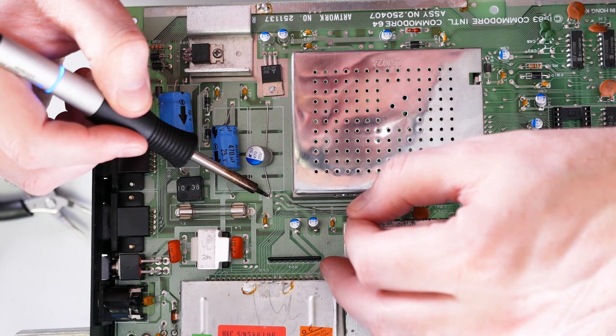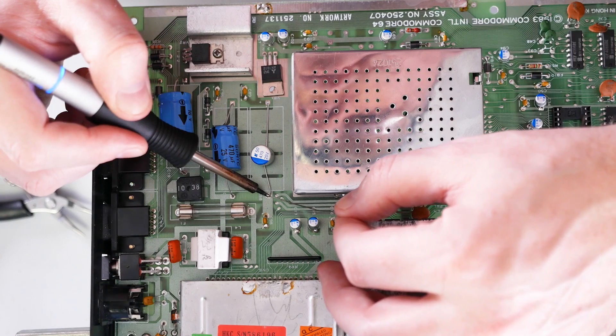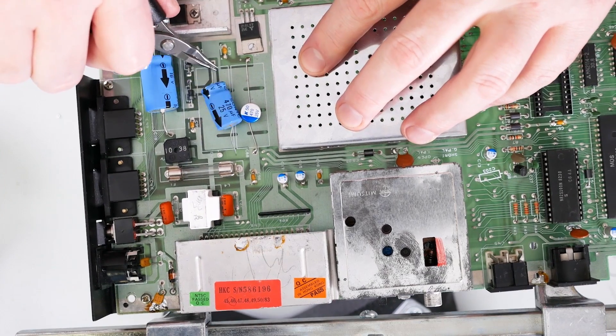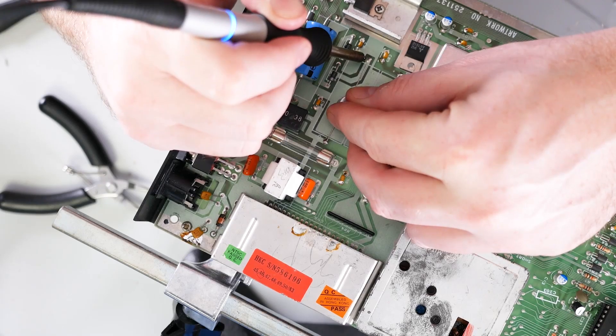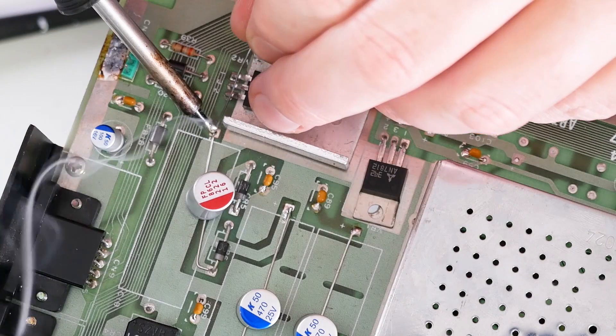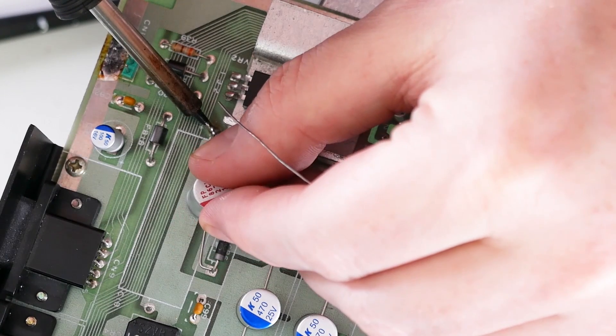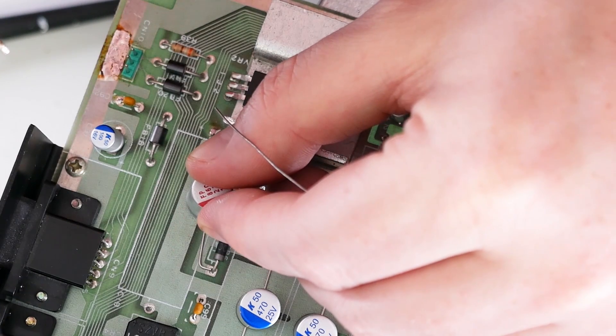Since I want to use polymer aluminum capacitors, that meant I could not get them in an axial format. So now I need to get creative with how I place these radials. Later, I will add some hot glue for mechanical relief.